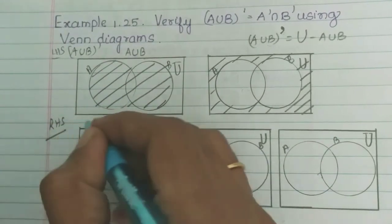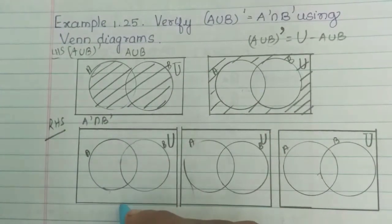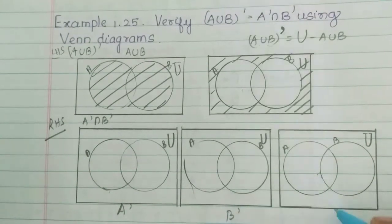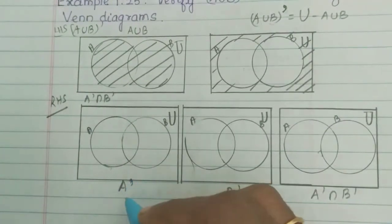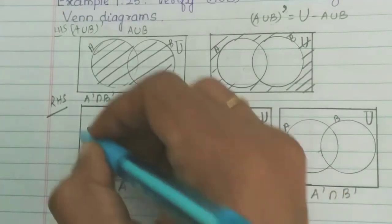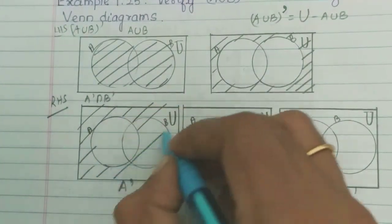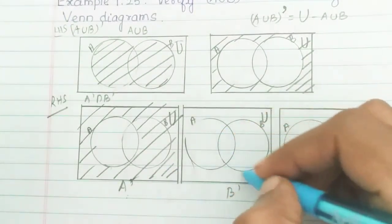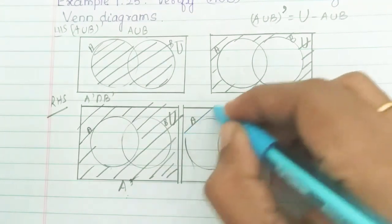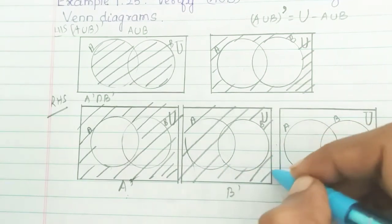So next, that is right hand side. Right hand side is A dash intersection B dash. First you have to use A dash, then B dash, then A dash intersection B dash. So now A dash — don't shade A, we will shade the remaining. We will shade all around the A circle. So this is A dash.